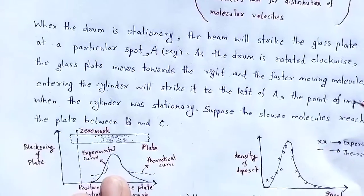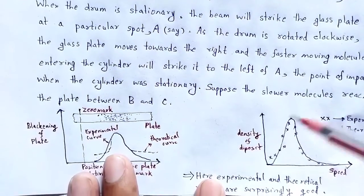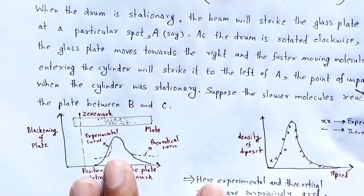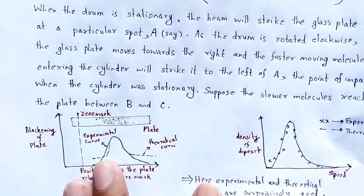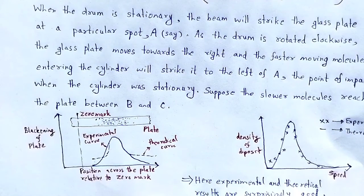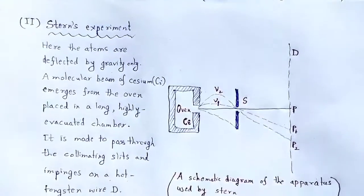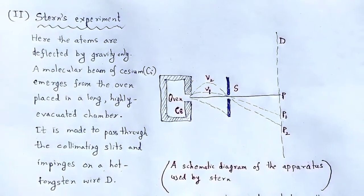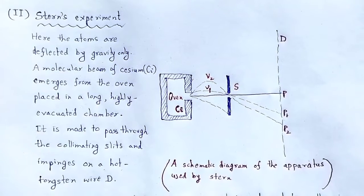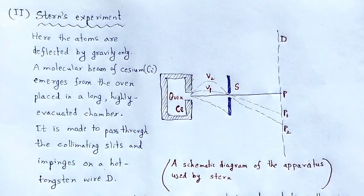So, Jatman and Co experiment to verify Maxwell-Boltzmann distribution of molecular speeds holds good. This is the experimental setup and working principle to detect the distribution of molecular speeds of gas molecules according to Maxwell and Boltzmann. Now another experiment conducted by Stern.